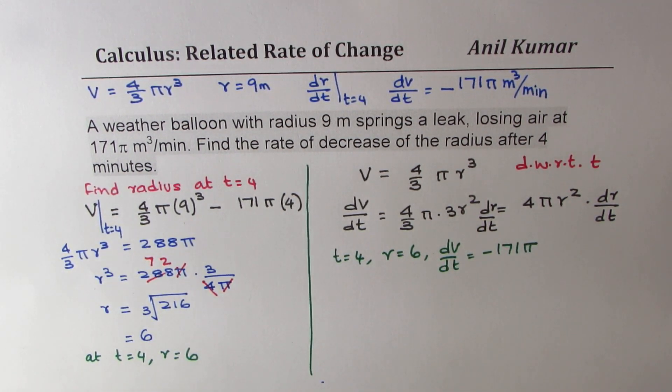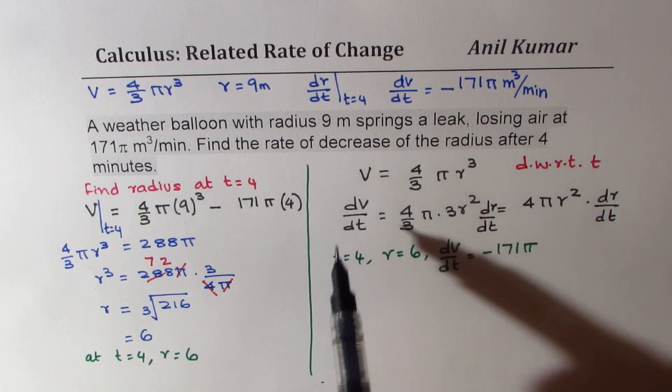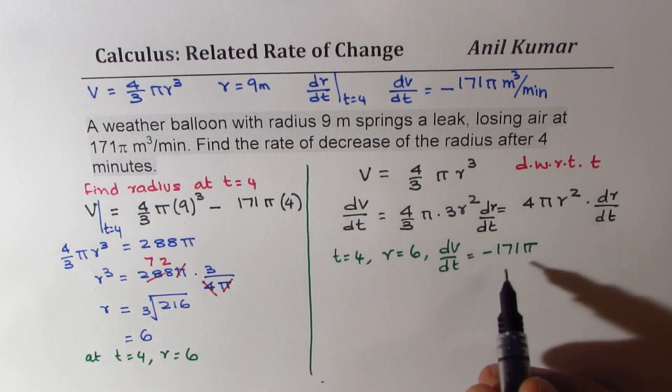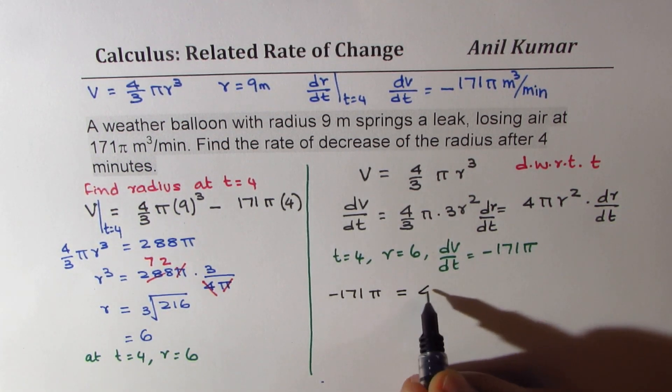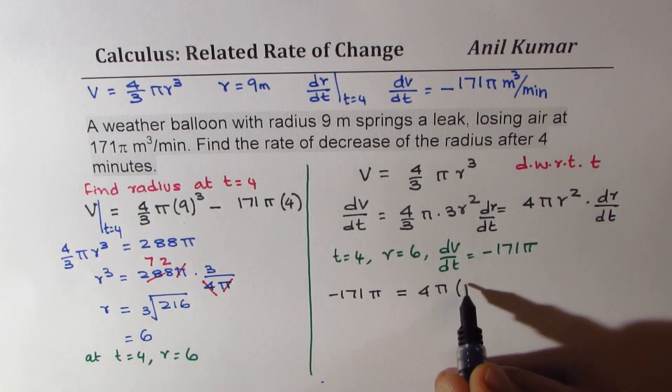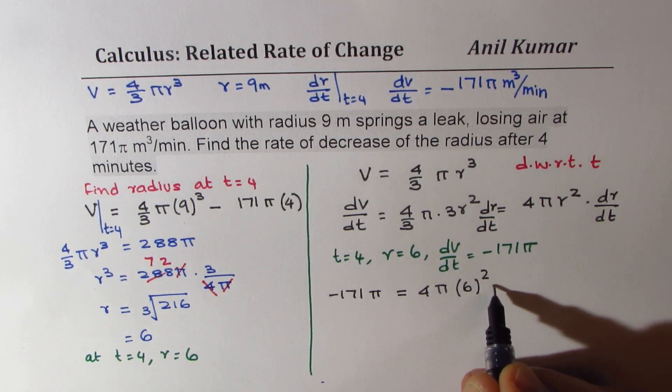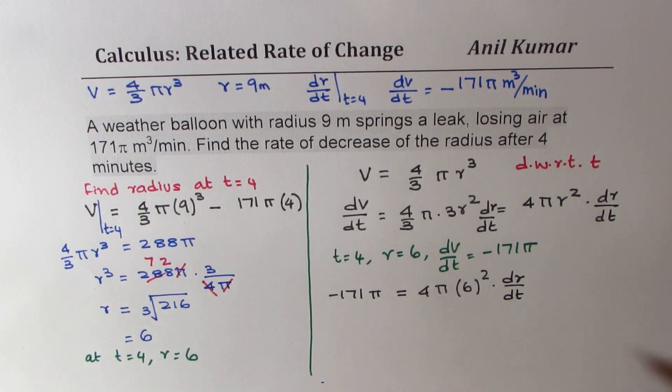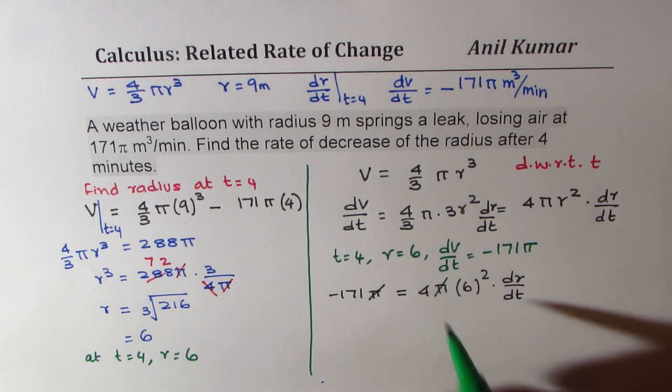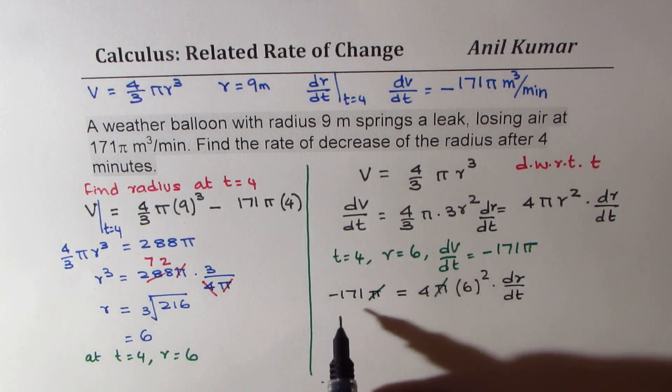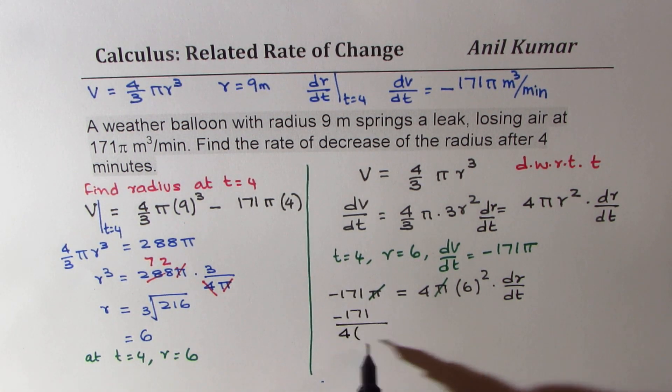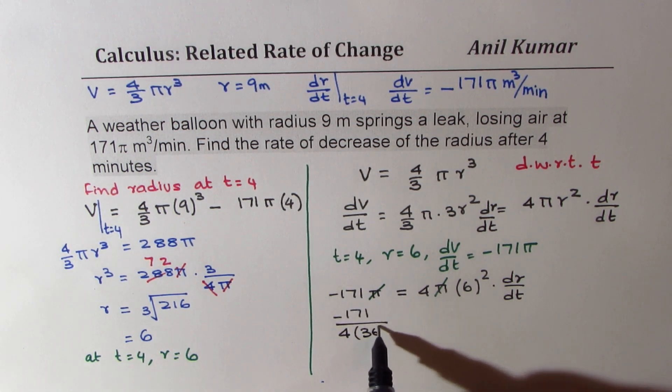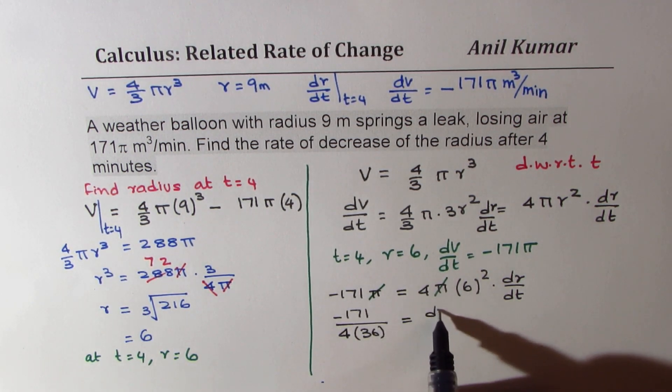So we know everything, we can find dr/dt now. Let's substitute these values. So dV/dt is -171π = 4π times radius is 6 squared times dr/dt. This cancels, we get -171 over 4 times 36 equals dr/dt.